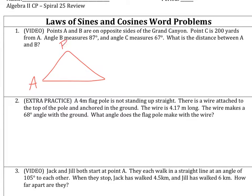I'm going to turn that into a triangle before I begin anything. I'll just call this A, B, and C. We've got point C is 200 yards from A, so that's 200. We've got angle B is 87, and angle C is 67.